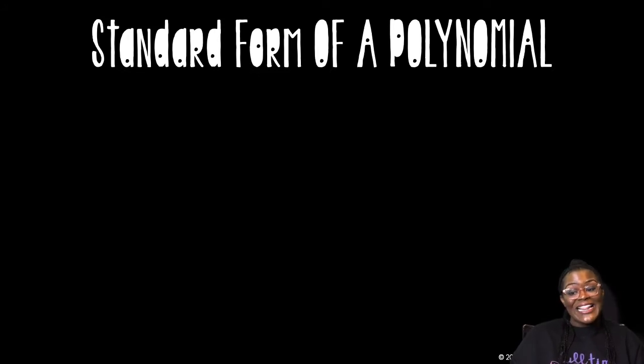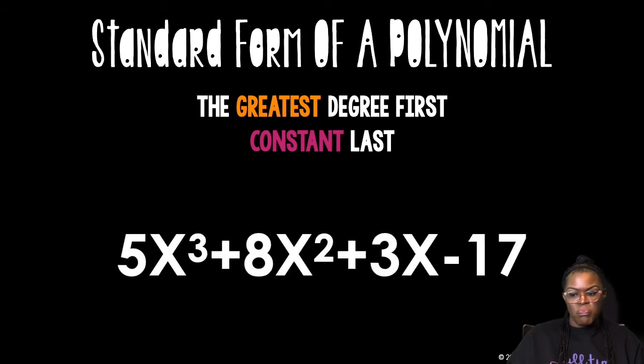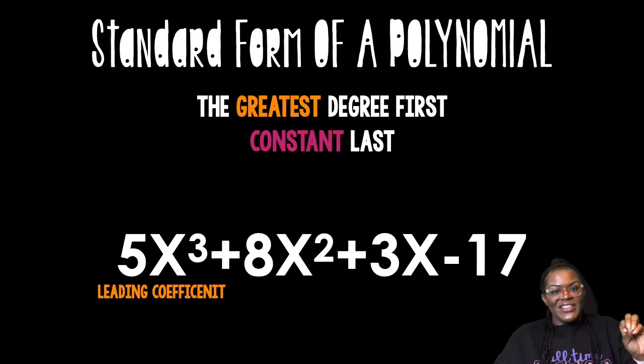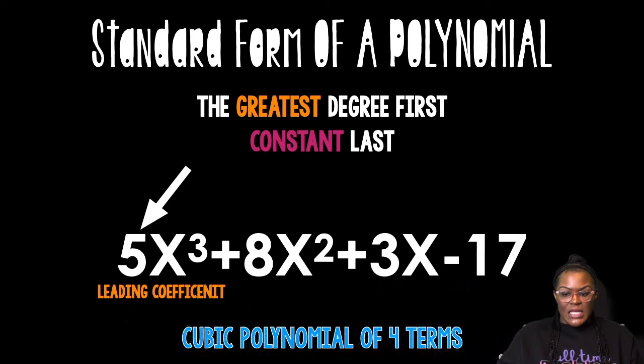Standard form of a polynomial is the greatest degree first, the constant last, or smallest degree last. So this polynomial that we were just looking at is in standard form because I have a cubed, a squared, a linear, and then a constant. So when it is in standard form, I call the coefficient, that 5, I call that the leading coefficient. And then I call it a cubic because the biggest degree categorizes the whole thing. So it's a third degree, so I call that a cubic polynomial of four terms.